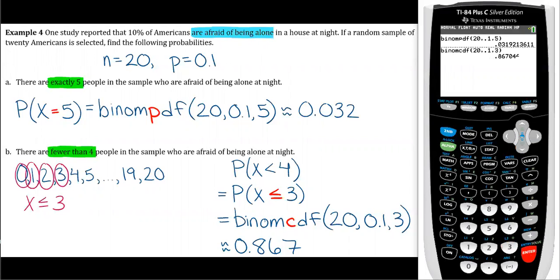Paste it, click enter again, and 0.867, 0.867. Yep, we got it right there.